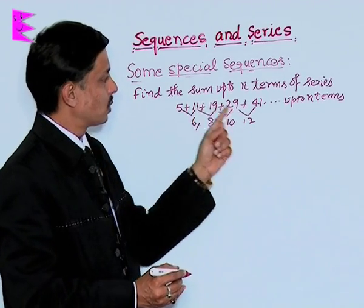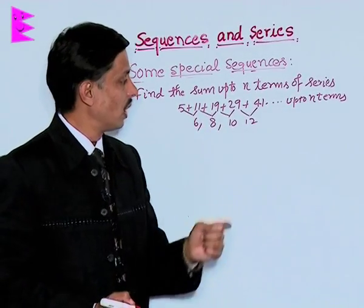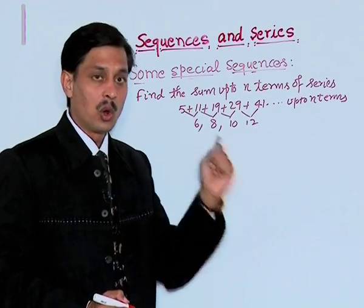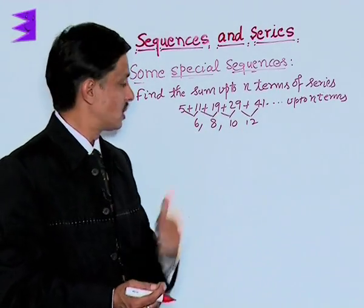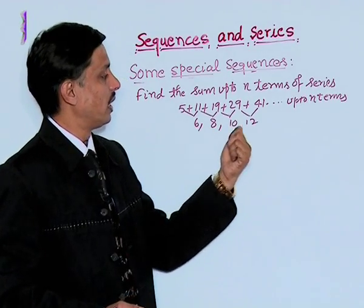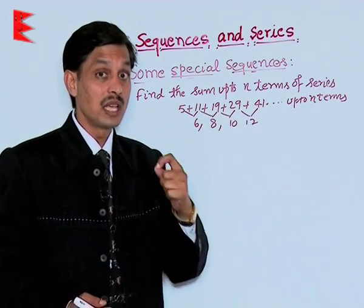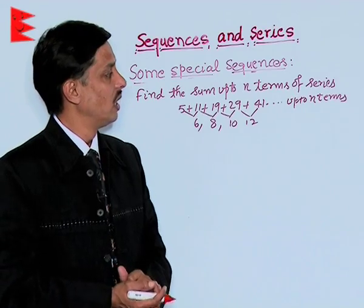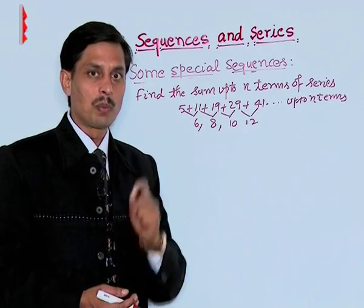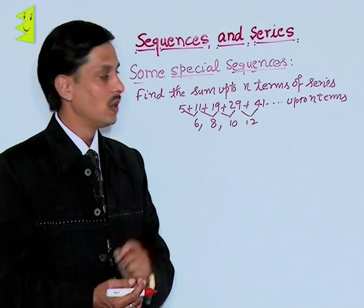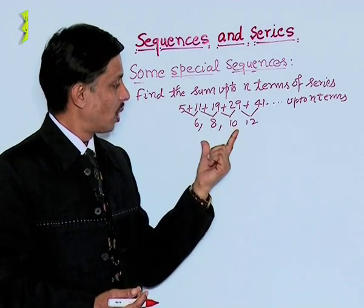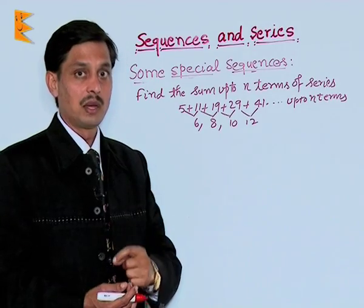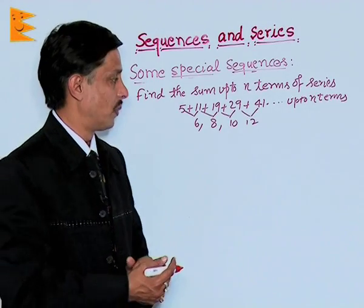The terms of given progression are not in AP, but their consecutive differences coming 6, 8, 10, 12 forms an AP. That is why such kind of problems are categorized for finding the sum of the n terms by the method of difference.